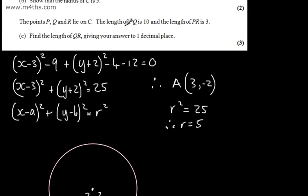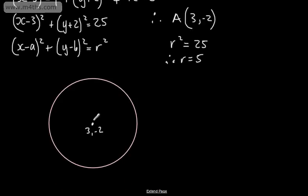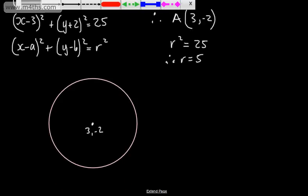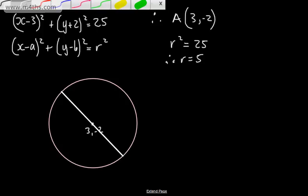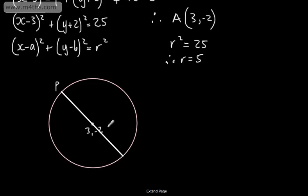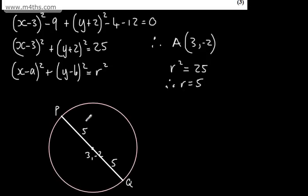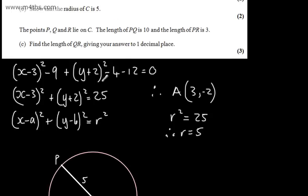The length of PQ is 10. This is a circle with a radius of 5, so if PQ is 10 that must be a diameter. So let's put that on — we've got P here and Q here. Remember the radius of this circle is 5, that's 5 and that's 5, so this must be a diameter.